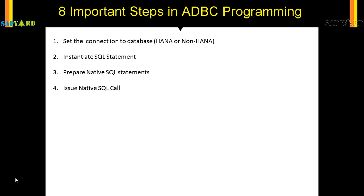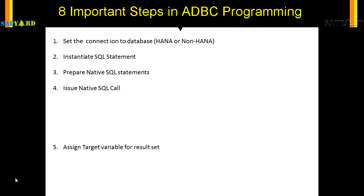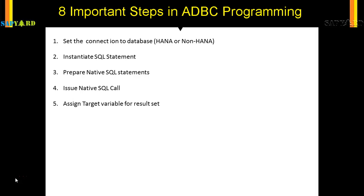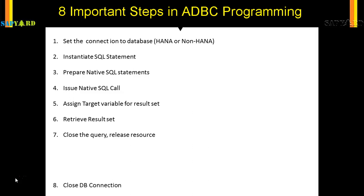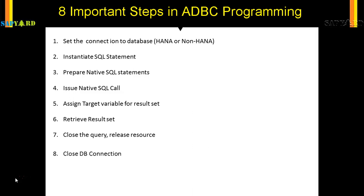Once you have triggered the SQL, you need to save it in some result set, so you have to assign a target variable for the result set. Once you have the variable set, you need to retrieve the result set — that is the sixth step. The seventh step is to close the query so that we can release the resource. The eighth step is to close the database connection, just as in the first step you built the connection.